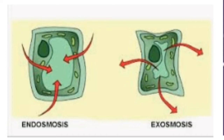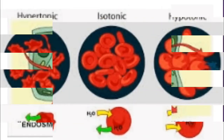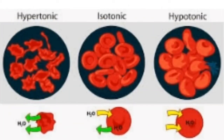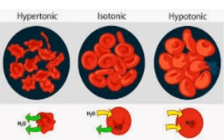Osmosis is a special kind of diffusion of water molecules or solvent through a membrane. It is just like a diffusion process, but in diffusion there is no membrane present, whereas in osmosis there is a semi-permeable membrane. More precisely, osmosis is the diffusion of a solvent, usually water, through a semi-permeable membrane from a dilute or weak solution into a concentrated or stronger solution — that is, from lower concentration to higher concentration.